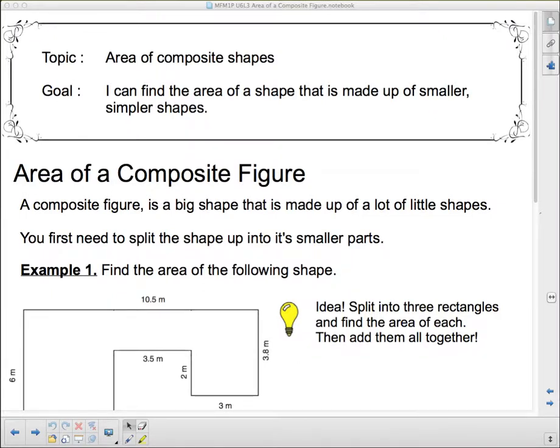Well hello 1Ps, and we're continuing on with our measurement unit today where we're going to be talking about area of composite shapes. Now a composite shape is a more complicated shape. Composite means composed of other things, so this composite shape is a large shape composed of smaller simpler shapes. So our goal: I can find the area of a shape that is made up of smaller simpler shapes.